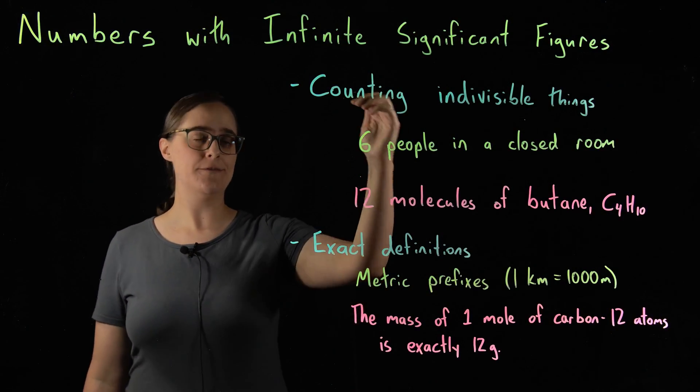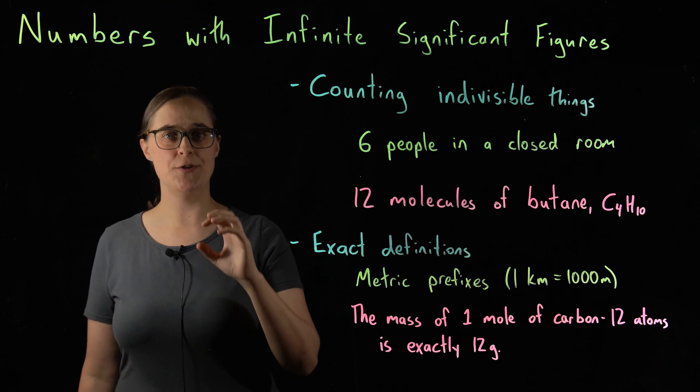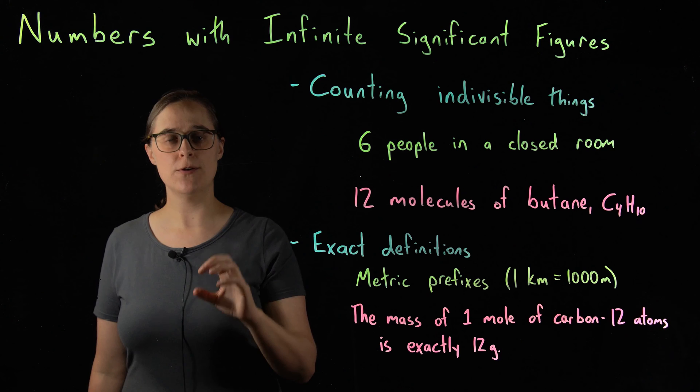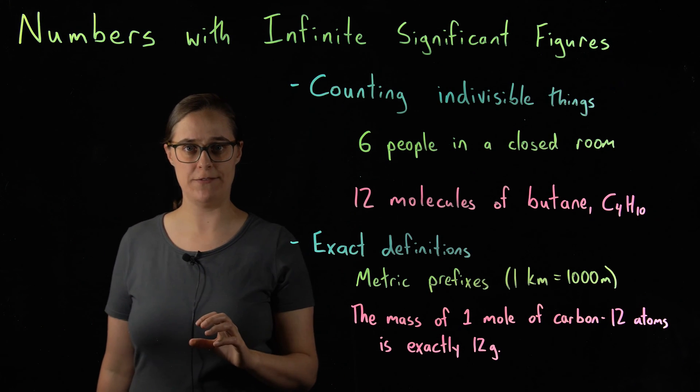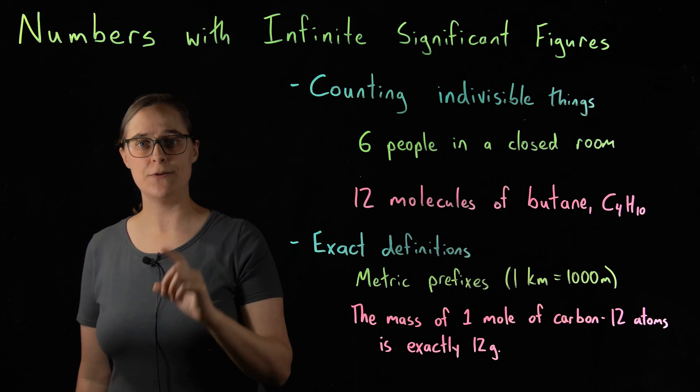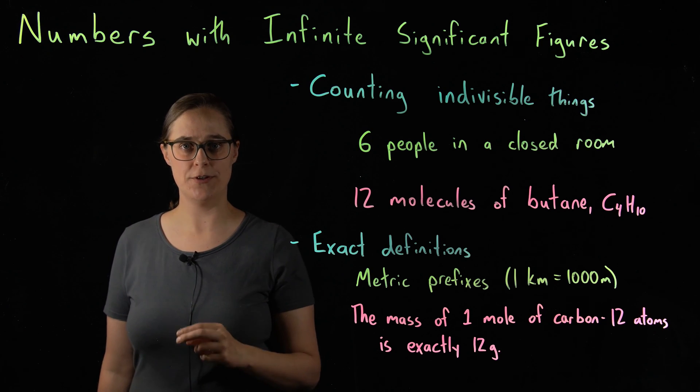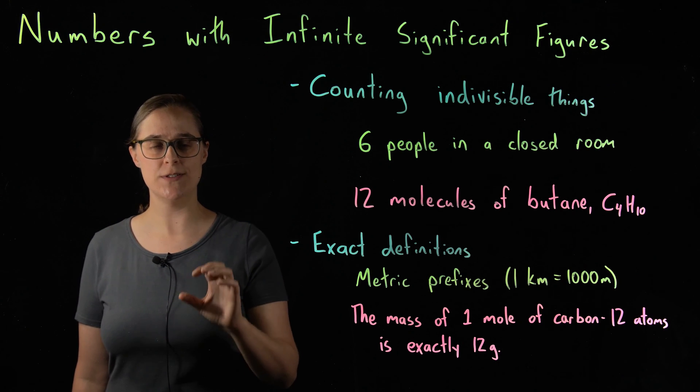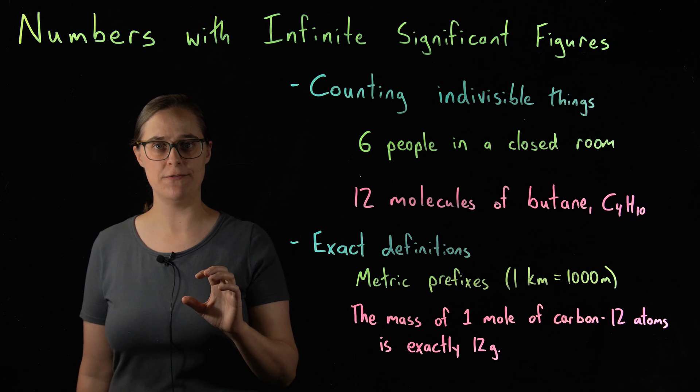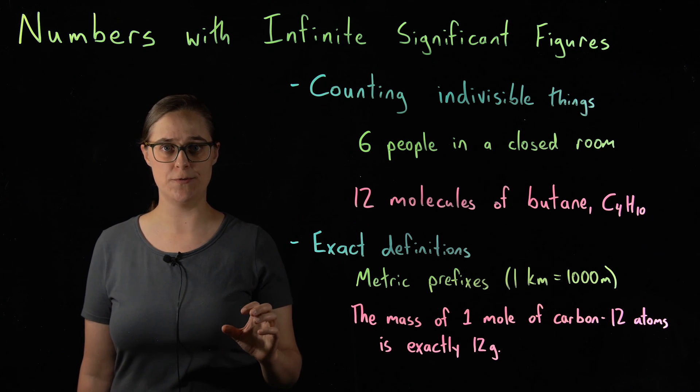So the opposite of counting would be measuring. If you are using instrumentation to measure something, those measurements do have a certain specific number of significant figures. So if you are using a ruler to measure a length, or you are using a graduated cylinder to measure a volume, those measurements have a certain specific number of significant figures depending on the precision of the instrumentation you've used.